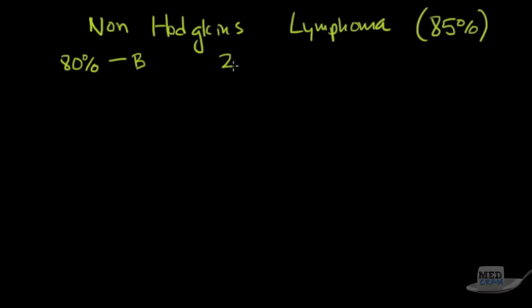Okay, so let's talk about specifically non-Hodgkin's lymphoma. We're going to talk about the different types. Now these make up about 85 percent of all lymphomas. So only a small fraction of lymphomas are Hodgkin's lymphoma, and we'll talk about that.